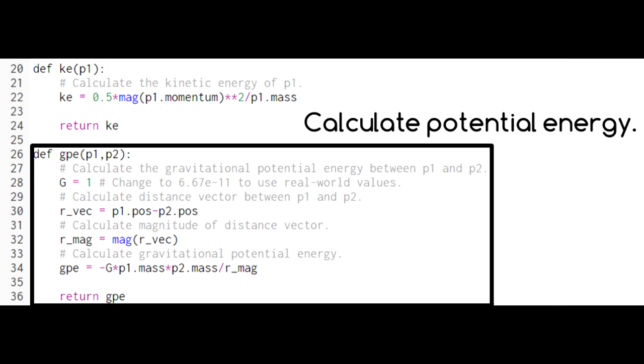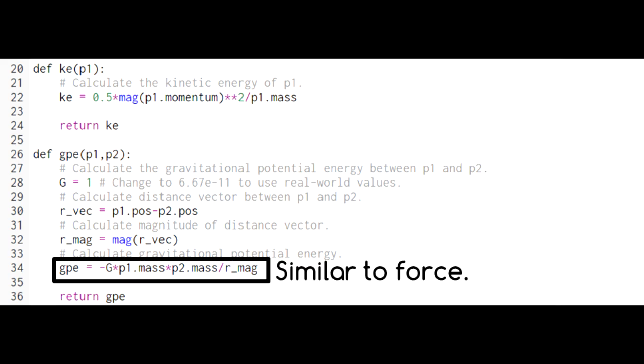This function calculates the gravitational potential energy between two objects. Notice that the process is similar to calculating the gravitational force, but it produces a scalar instead of a vector.